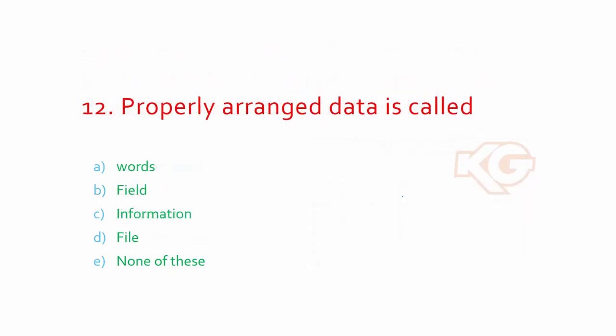Properly arranged data is called? Is it a word, field, or information? The actual answer is option C: information. It can't be votes or a field. Field comes into picture in Excel, and word cannot be properly arranged - it's only a single word. Information is the exact and point answer for this question.